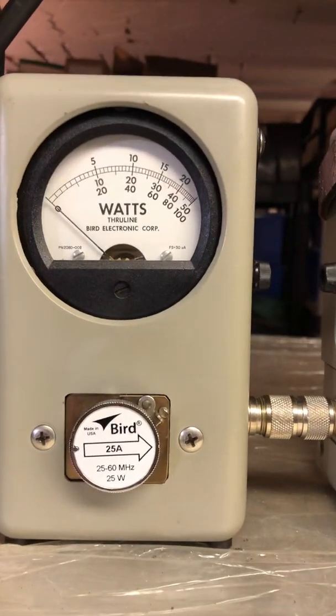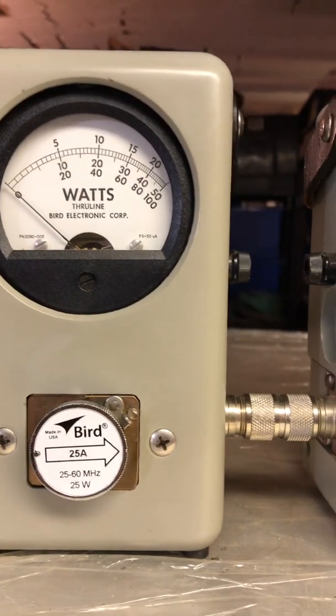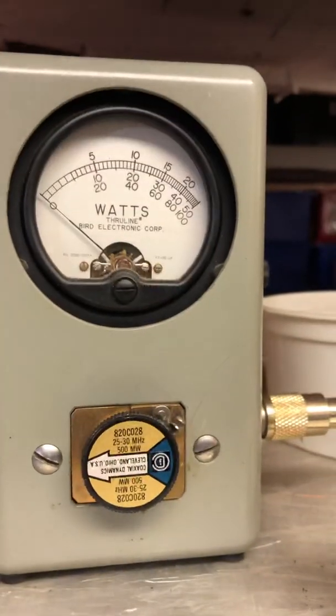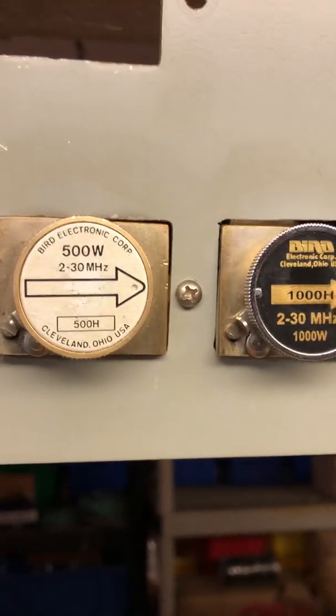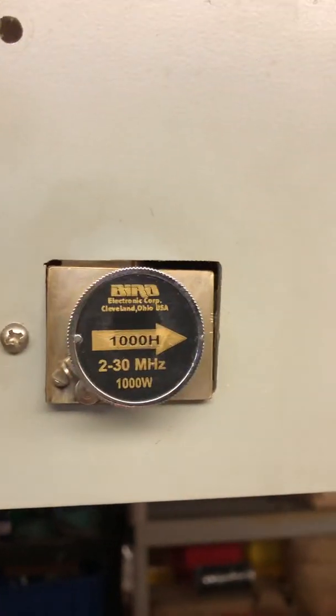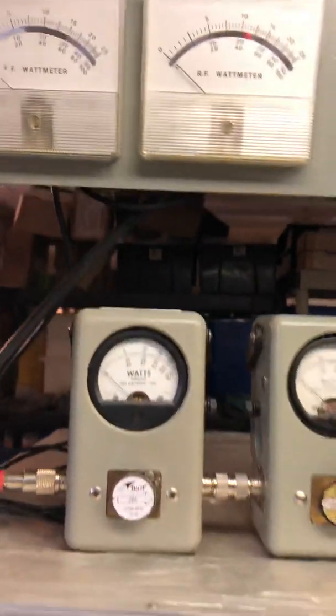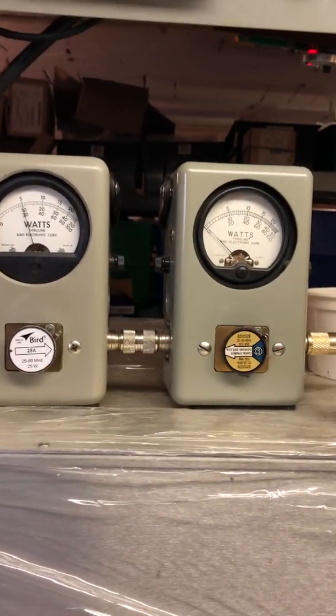So, 25 watts RMS forward for a drive, that's 500 milliwatts for reflect, 500 watt slug for RMS, thousand watt for PEP. Meter on the left is RMS, meter on the right is PEP. So we'll show you pass-through.